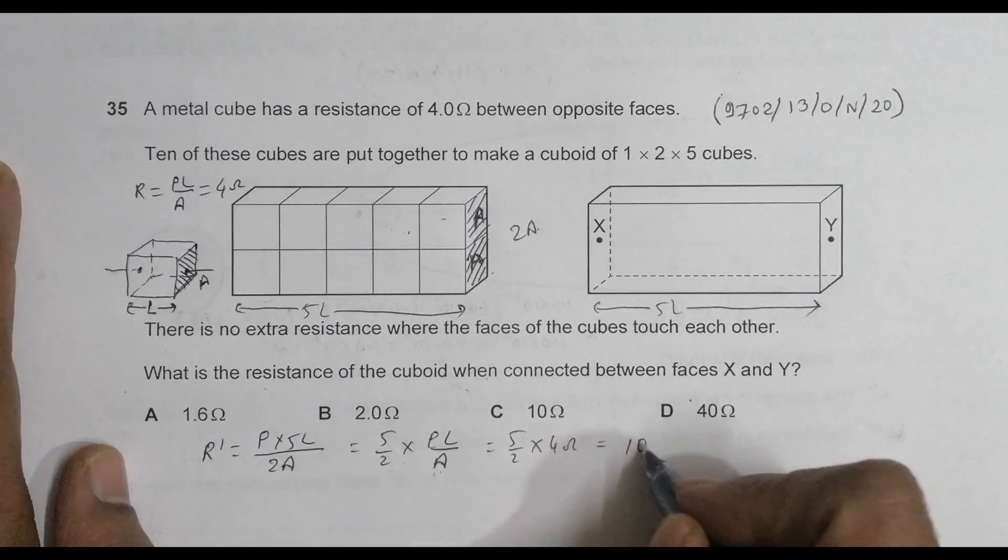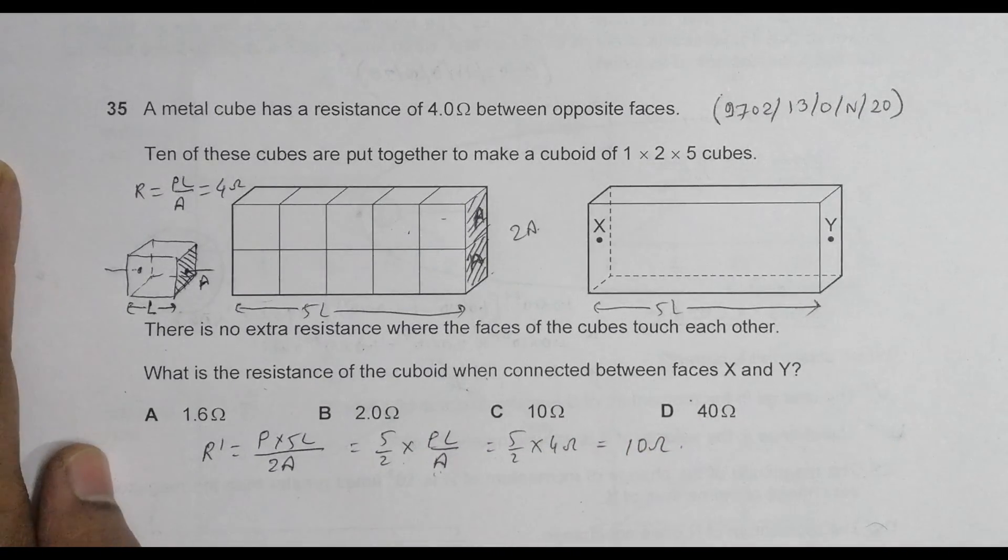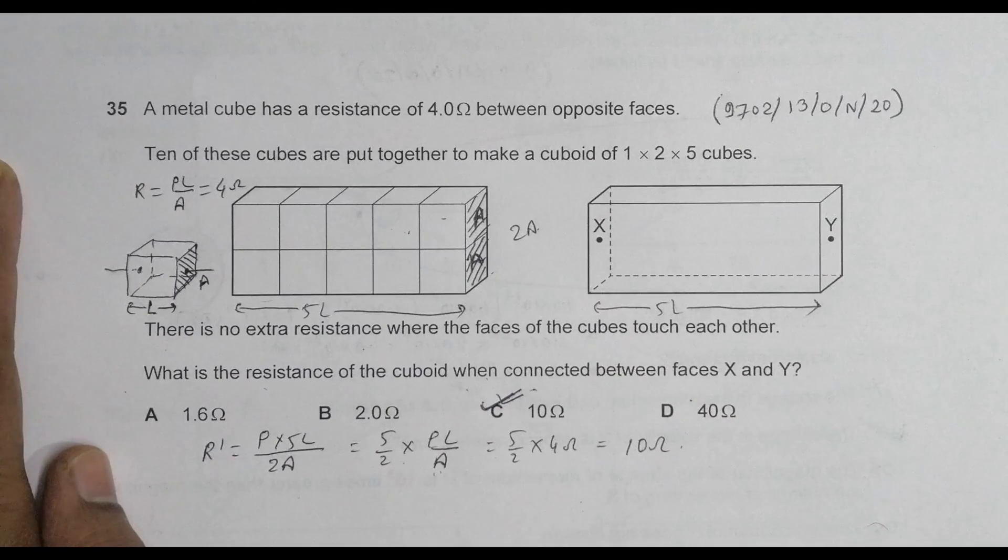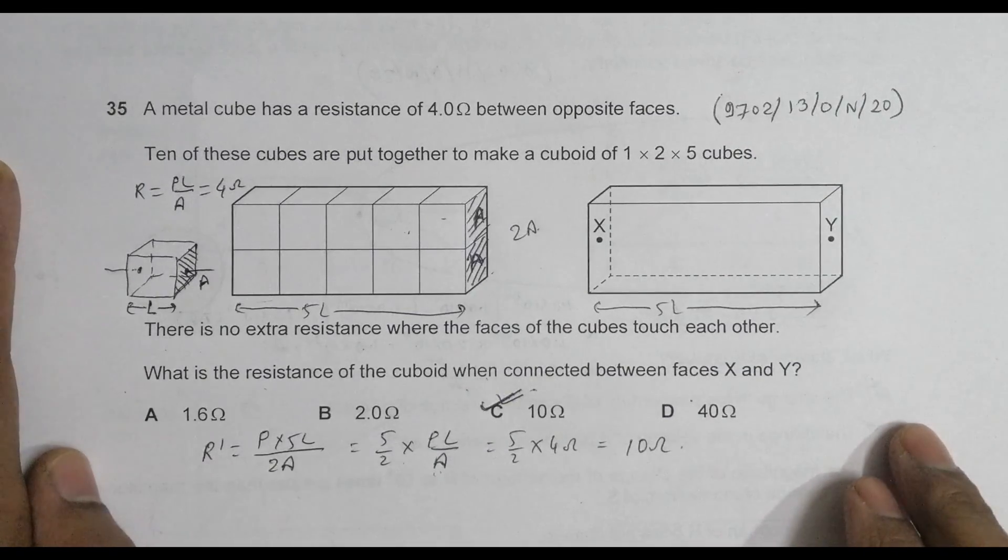So as you go through choices, choice number C seems to be the correct choice. Such type of questions often appear in our paper one. Sometimes it is wire, sometimes it is cube, sometimes we flatten something into sheets and so on. Everywhere the case is same. We have to identify what will happen to L and then A and then do the necessary calculations.